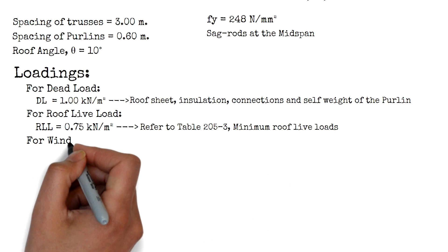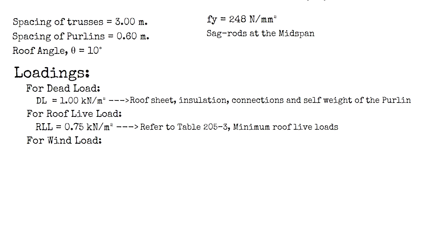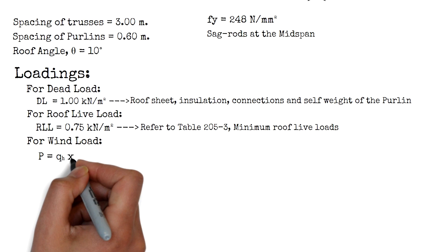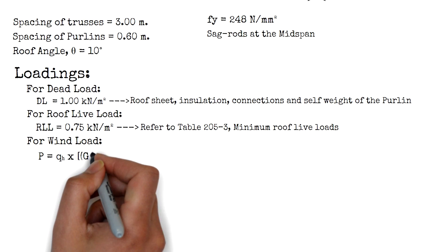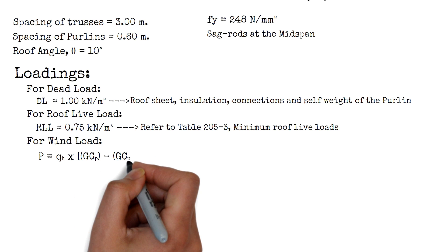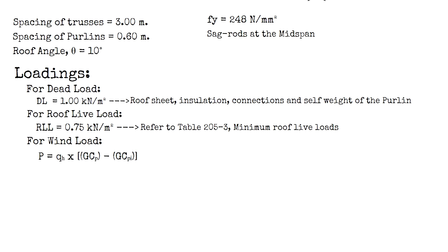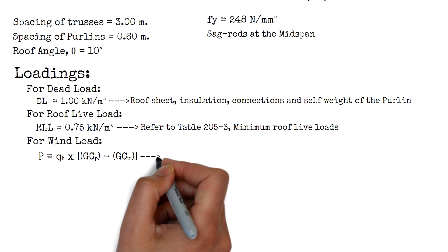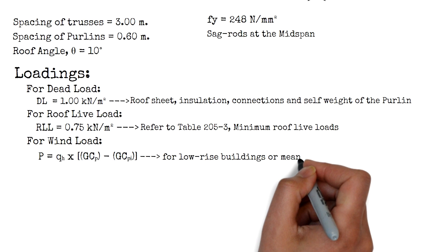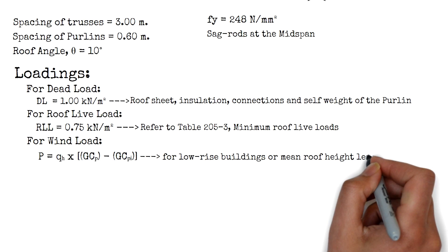For the wind load, there are several ways to calculate wind pressures. You may calculate the wind pressure P by following the conventional way, wherein the wind pressure P equals the velocity pressure evaluated at mean roof height, Q_H, times the external pressure coefficient, GC_p, minus the internal pressure coefficient GC_p. That is for buildings with mean roof height less than 18 meters, or classified as low-rise buildings.